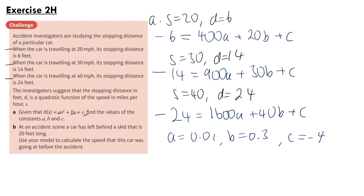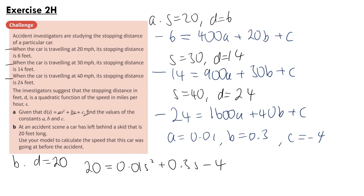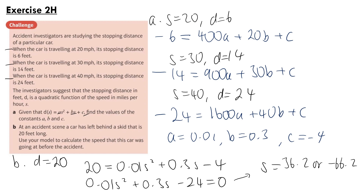Part B says: at an accident scene, a car leaves a skid that is 20 feet long. Use the model to calculate the speed the car was travelling before the accident. Setting d = 20: 20 = 0.01s² + 0.3s - 4, rearranging to 0.01s² + 0.3s - 24 = 0. Putting this into the calculator, we get s = 36.2 or s = -66.2 (to three significant figures). Since speed can't be negative, the answer is 36.2 miles per hour.